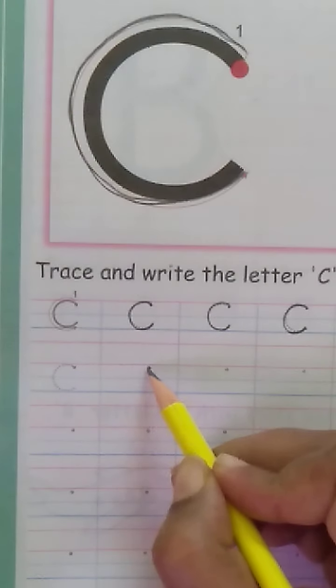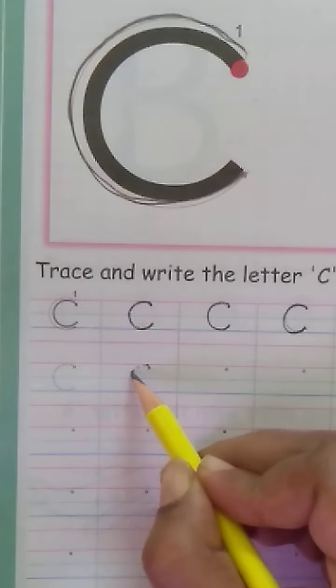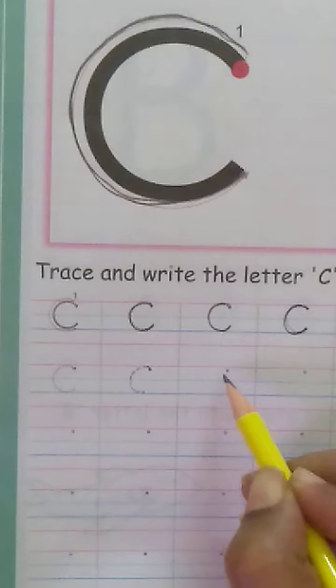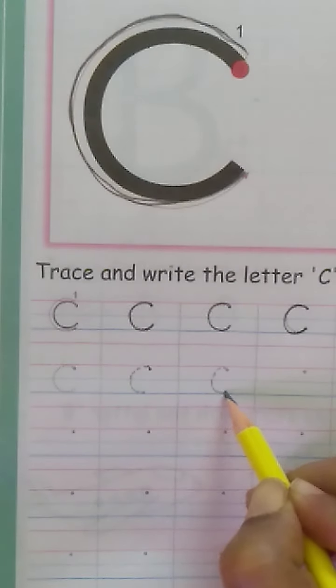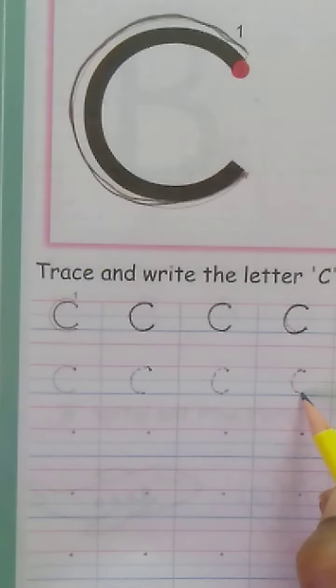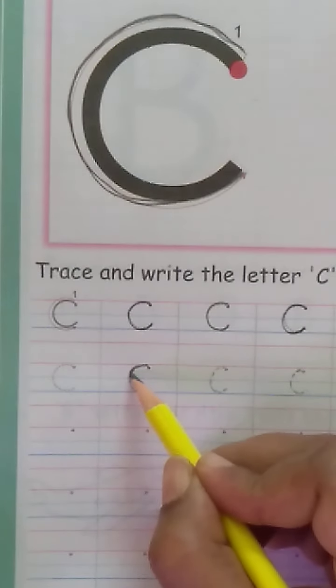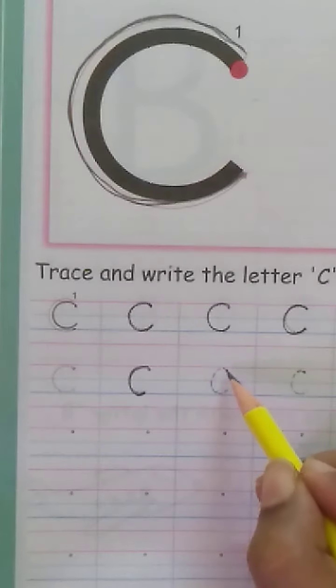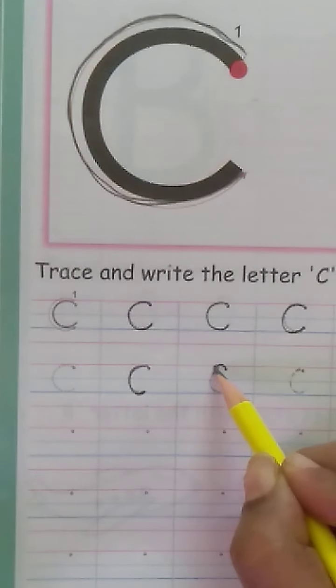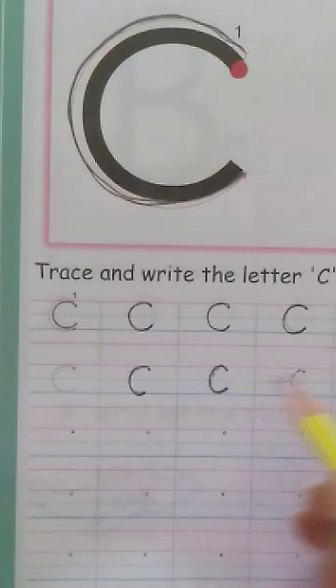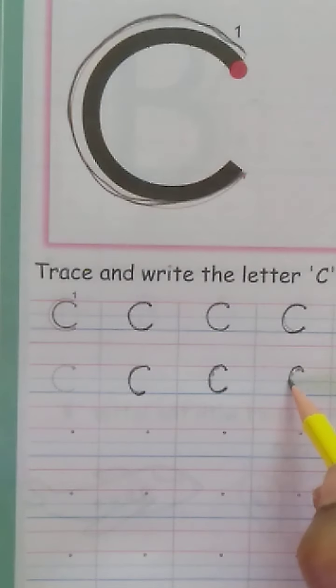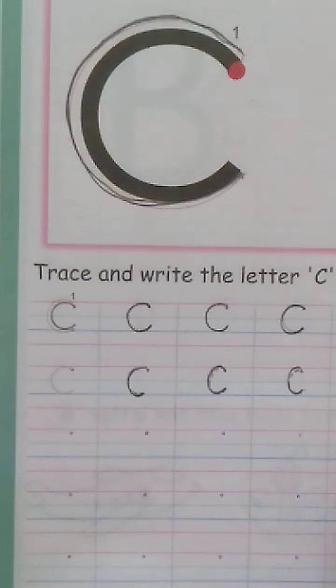Parents, if you feel they are not able to differentiate, you can put the dots for two more lines like this to make it easy for them. Just two more lines and then I think they will be able to do it on their own. See from where it starts and where it ends. Start from the pink line and touch the blue line.